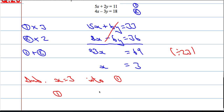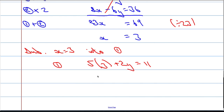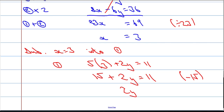I'm going to have 5 times 3 plus 2y equals 11. So that's 15 plus 2y equals 11. Now I'm going to take 15 off both sides, so we get 2y equals minus 4.